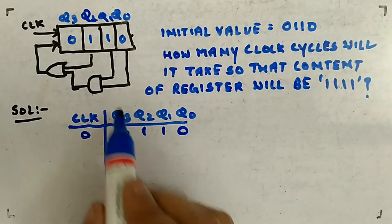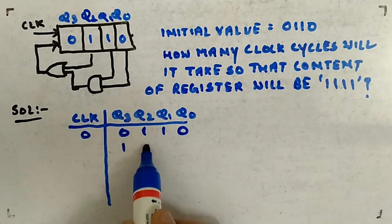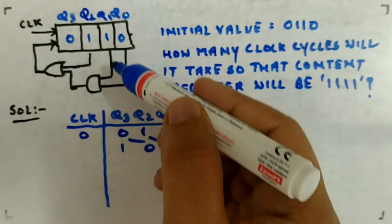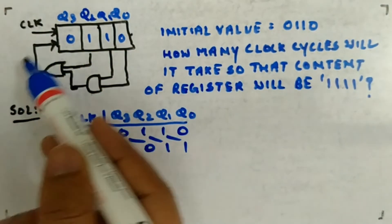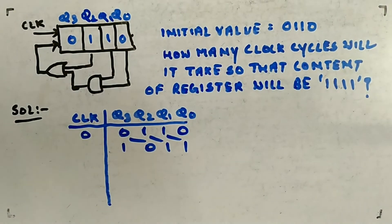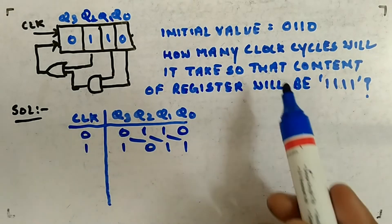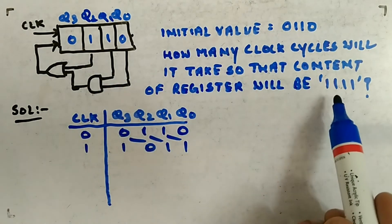So I'll do: 1 AND 0 is 0, 0 OR 1 is 1. So here 1 will come, and 011 - these guys will be shifted. This is a shift right. Instead of providing the feedback directly, I put some gate between and then provided the input. This is the first clock pulse.